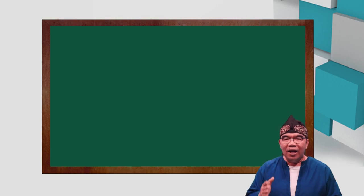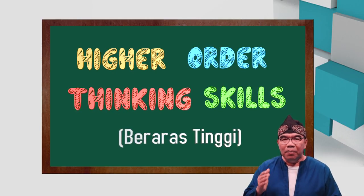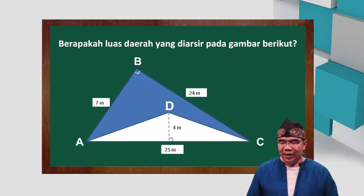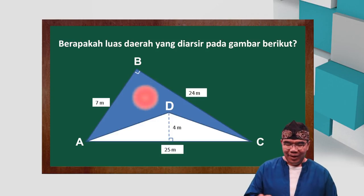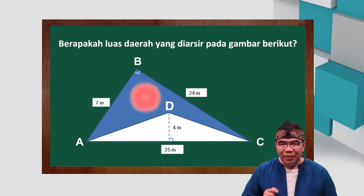Sekarang kita akan membahas soal segitiga yang menggunakan HOTS, atau Higher Order Thinking Skill, soal yang berarah setinggi. Perhatikan soal HOTS tentang segitiga berikut ini. Berapa luas daerah yang diarsir pada gambar berikut? Bagaimana cara menjawabnya?